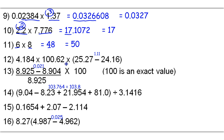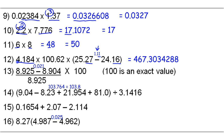4.184 times 100.62 times (25.27 minus 24.16). We have to subtract these two numbers first, and so when we do that, we get 1.11, which already has two decimal places so no rounding needed there. Now we multiply 4.184 times 100.62 times 1.11, and that gives us a raw answer of 467.3034288. We base rounding on the least sig figs: this number has 4, this has 5, and this has 3 — using the number after subtracting. So we're going to have 3 sig figs in our final answer, rounding off here at 467.